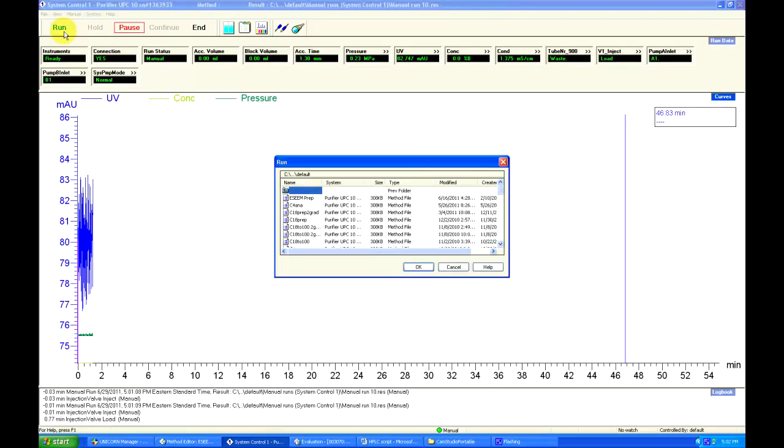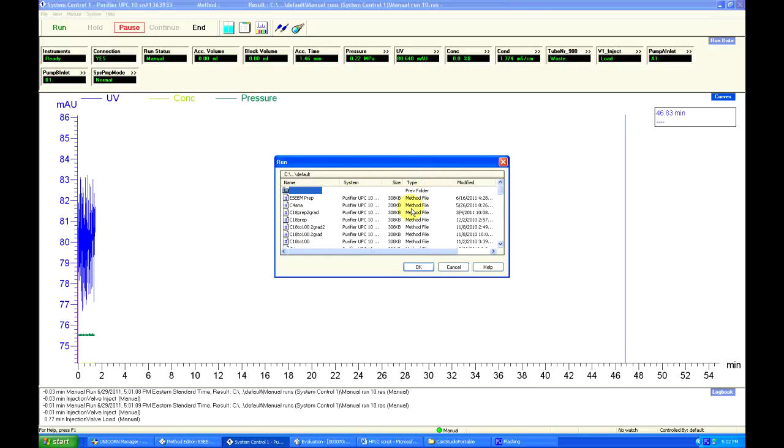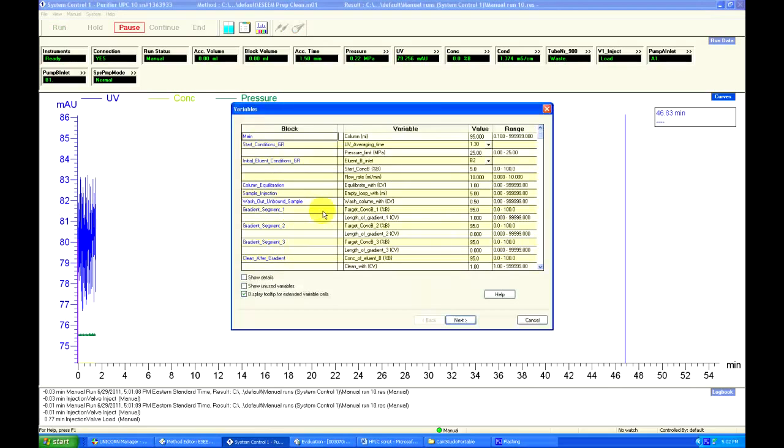Now we can start our run. Click Run. We are greeted with the Run window, which consists of a list of methods we can use. Make sure the method at least matches the scale of your run, whether it is prep, semi-prep, or analytical. After highlighting the desired method, hit OK.